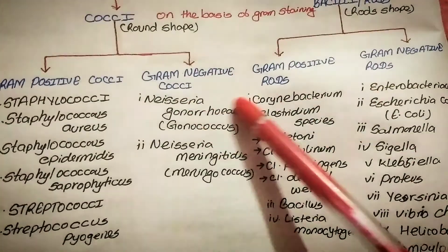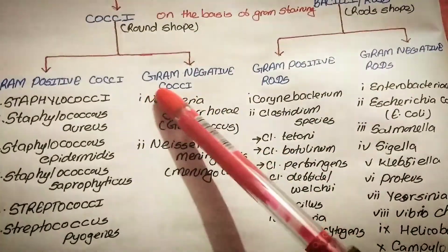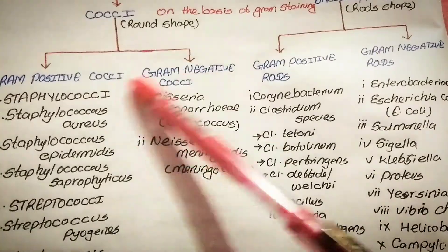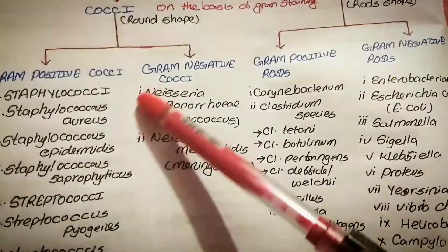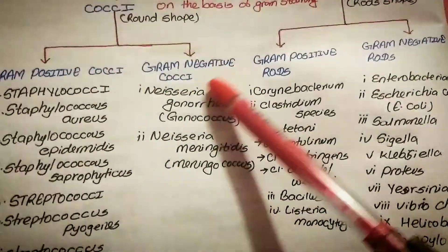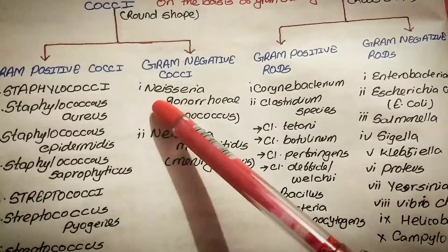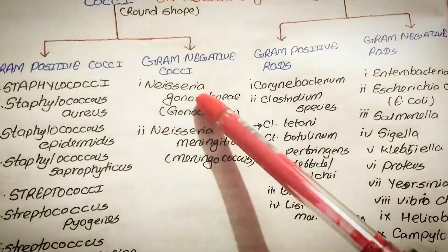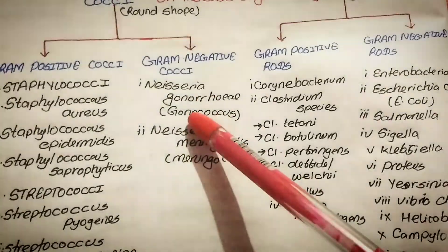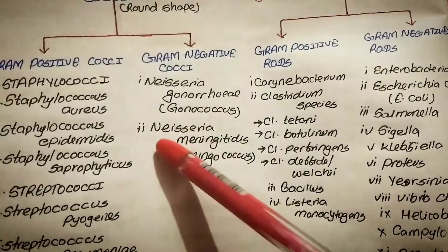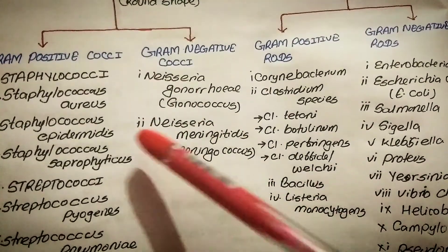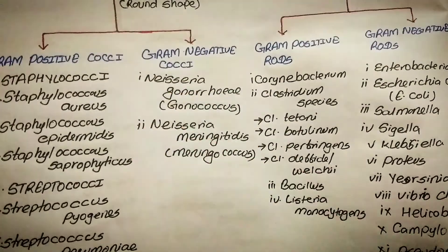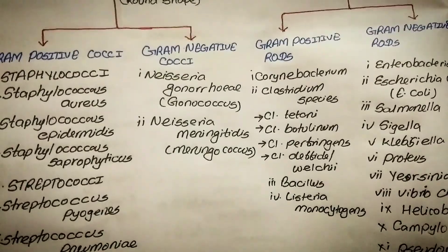Another type of cocci is gram-negative cocci. Inside gram-negative cocci there is Neisseria gonorrhoeae, that is gonococcus, and Neisseria meningitidis, that is meningococcus.